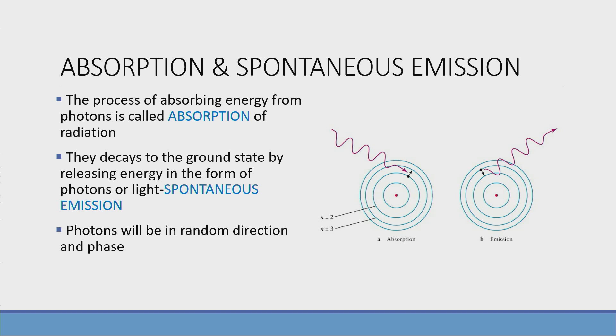The electron in the excited state or the higher state is unstable, so it has to decay to a ground state. While decaying, it emits energy in the form of photons that is known as spontaneous emission. And these emitted photons will be in random direction and phase.